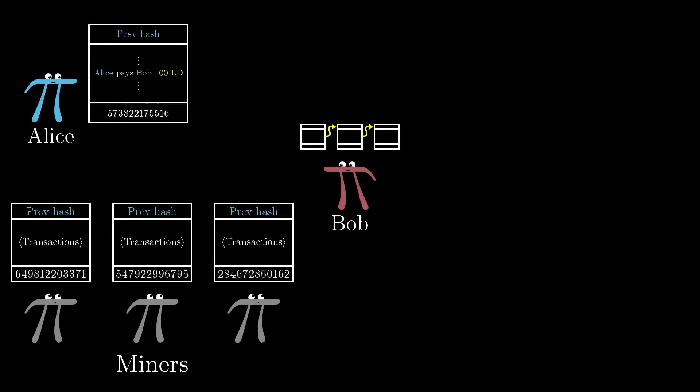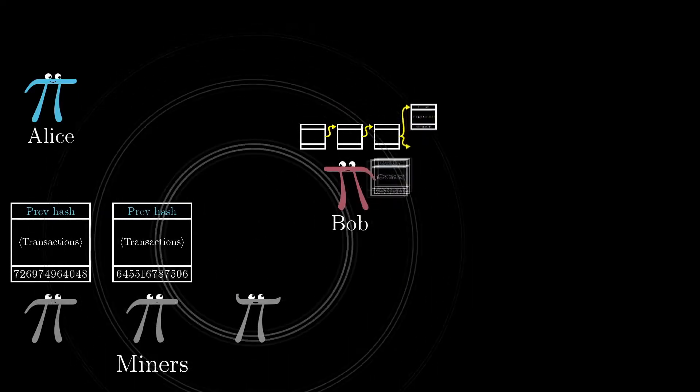To do this, she would have to find a valid proof of work before all of the other miners, each working on their own block. And that could definitely happen. Maybe Alice just happens to win this miniature lottery before everyone else. But Bob is still going to be hearing the broadcasts made by other miners.